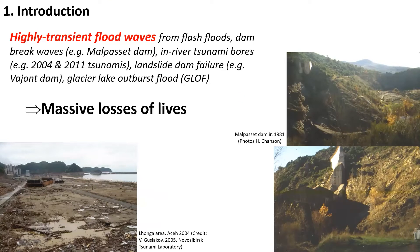Highly transient flood waves may result from flash floods, dam break waves, in-river tsunami bores, landslide dam failure, and glacier lake outburst floods. They have caused massive loss of lives. Within the last 40 years, more than several hundred thousand lives were lost.